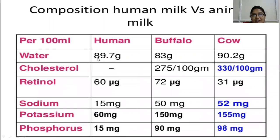Water constitutes 88 to 89% in human breast milk, and cholesterol is maximum in cow milk. Sodium, potassium, and phosphorus are much higher in cow milk, whereas in human milk they are less in proportion to newborn and renal maturity.